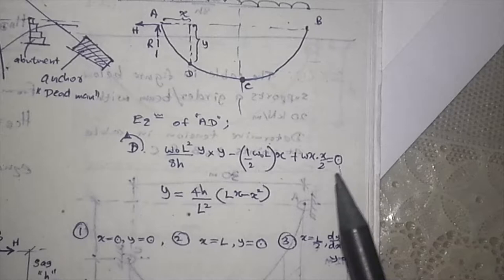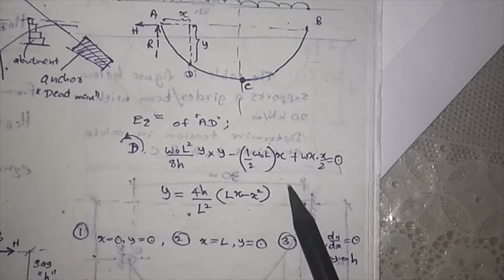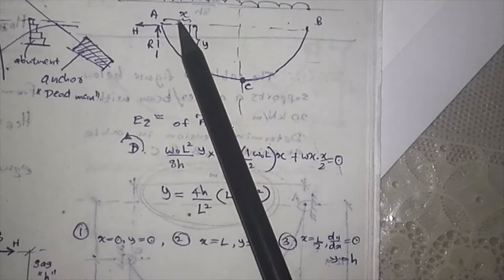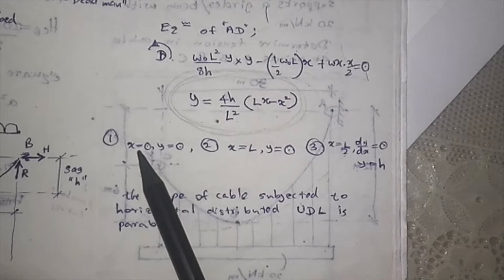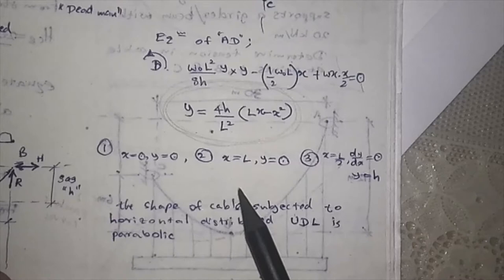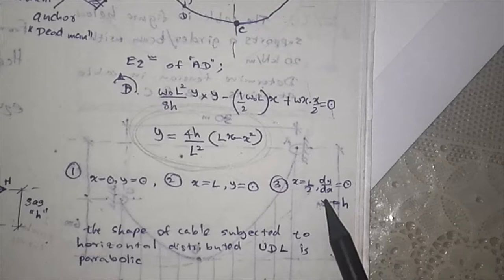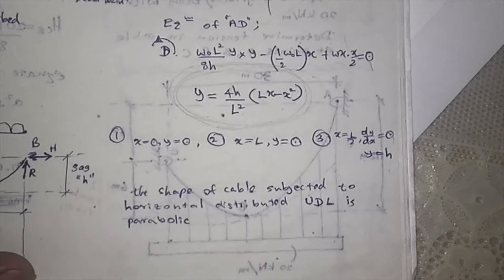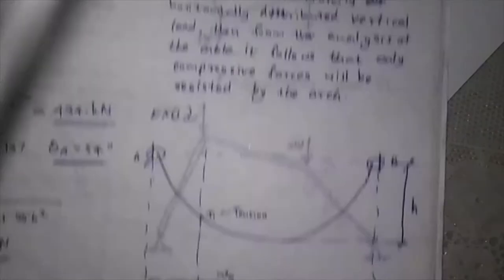Now you have an equation determined by this process. At point 1, when X equals 0, Y equals 0. Point 2 is X equals L, Y equals 0. At point 3, X is L over 2, and Y equals H. So the shape of the cable subjected to horizontal distribution UDL is parabolic. You can clearly see the shape is parabolic.